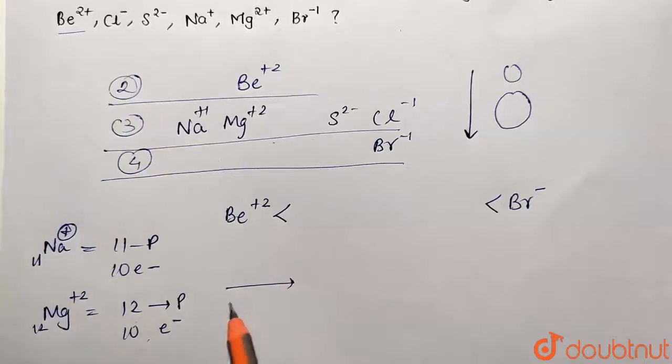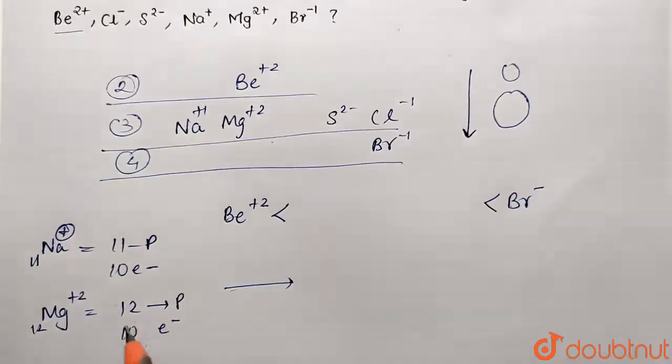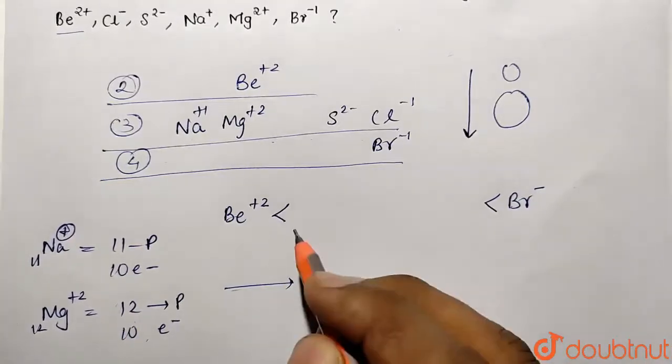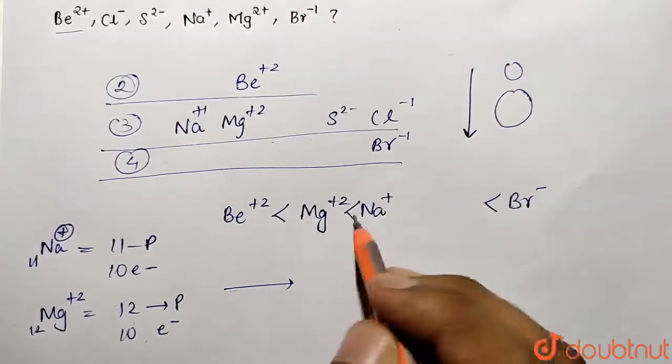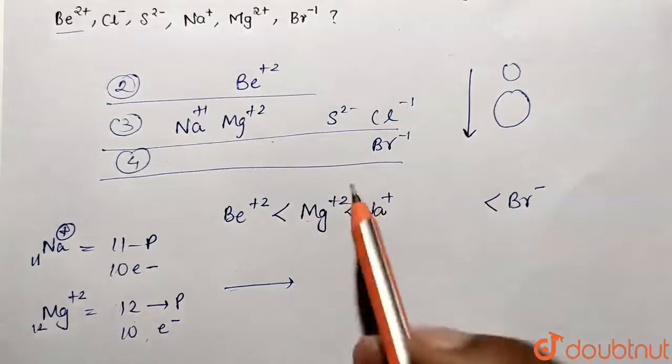Or the general trend you can also say - along the period, size will reduce. So this is correspondingly smaller size. So magnesium will be having a smaller size corresponding to sodium. So we have decided between these.